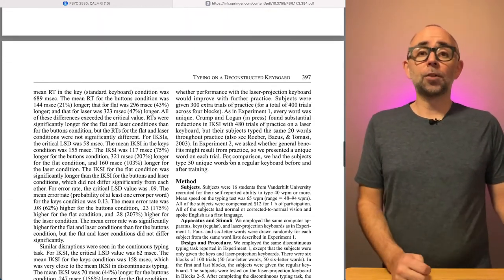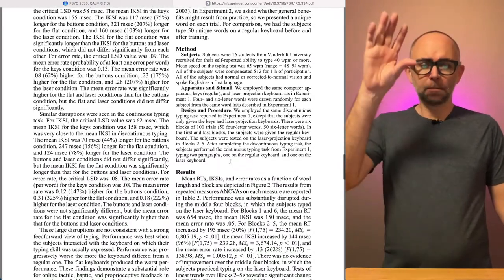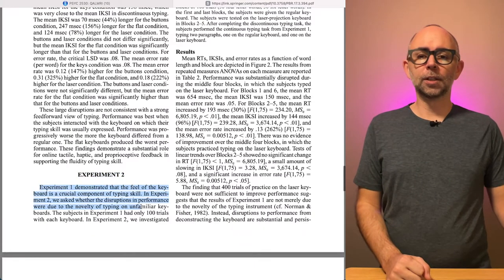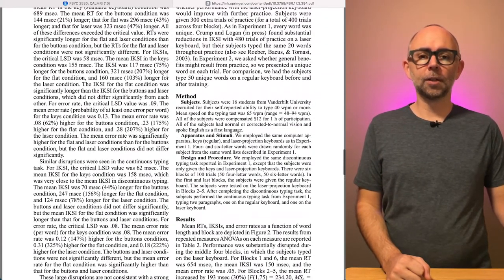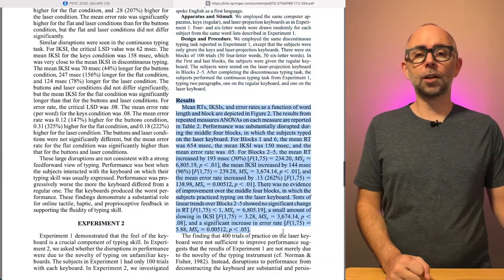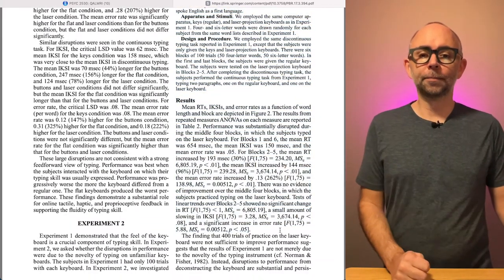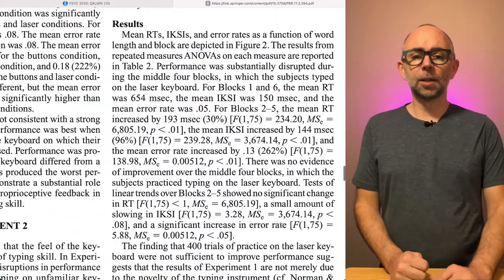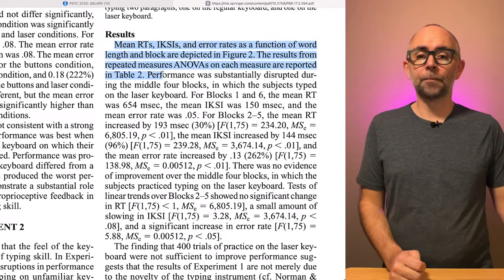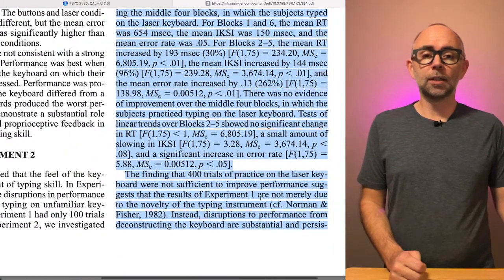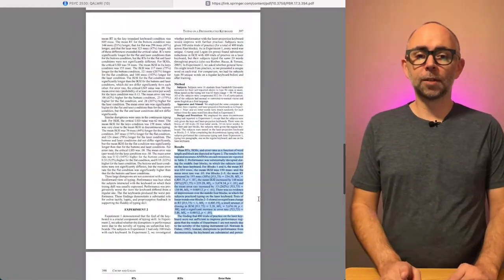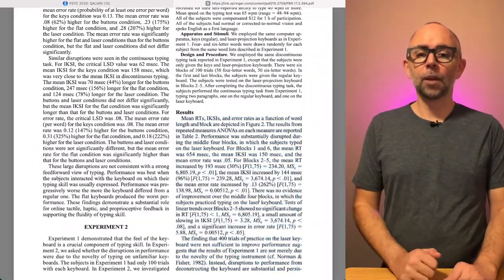This paper happens to have two experiments. So, these basic pieces repeat themselves. There's an Experiment 2, there's an introduction to the second experiment, a much shorter Method section, and again, a Results section saying what happened. Here's an example of how some of these things can be confusing if you're unfamiliar with them. So, what does this mean? This is a whole bunch of statistical information about the results of this paper.